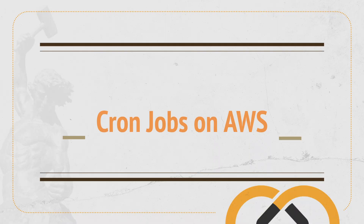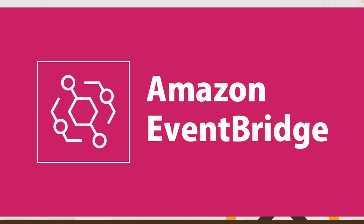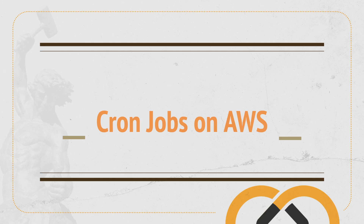Hello everyone, this is Marco speaking. Today you will learn how to execute cron jobs on AWS for triggering different services and applications. For doing this, we're going to use a service called EventBridge.